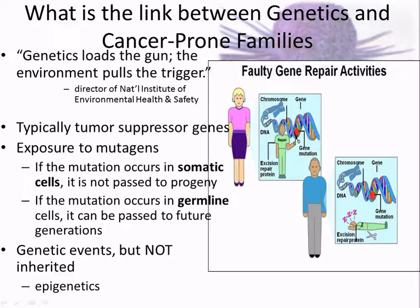There is a link between cancer and cancer-prone families. If you have a family history of cancer, there are things you can do — for example, if there's a breast cancer history, doctors will start mammograms earlier and more frequently. Being careful with your environment matters too: if you have a history of breast cancer, you don't want to be a smoker. Somatic mutations happen to you during your lifetime, while germline mutations occur in egg or sperm and are passed on to the next generation.